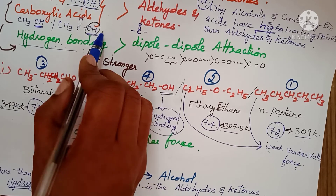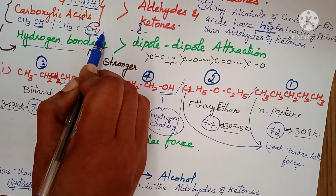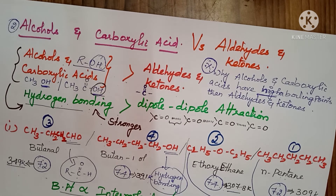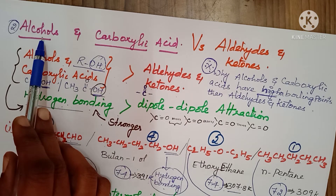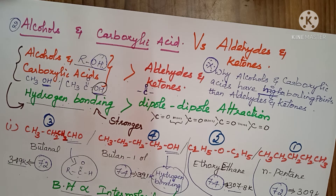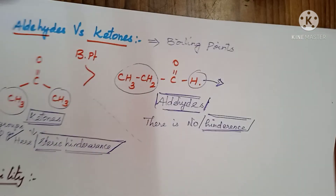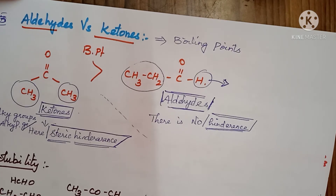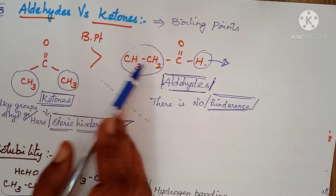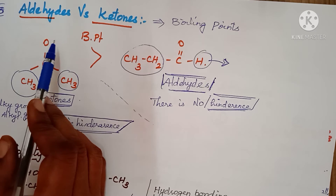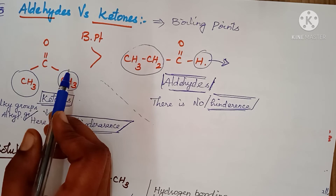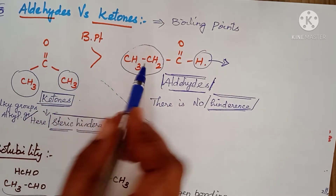Now comparing aldehydes and ketones with each other: ketones have a higher boiling point than aldehydes. The general formula of aldehyde is RCHO and for ketone it is RCOR'. In ketones, both sides of the carbonyl carbon have alkyl or aryl groups attached.